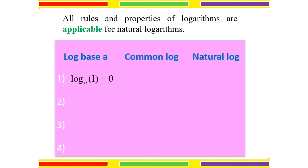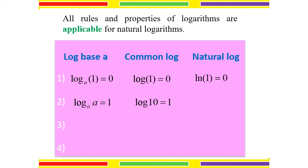All rules and properties of logarithm are also applicable for natural log. Log base A of 1 equals 0 — any value multiplied 0 times gives 1. This holds for common log (log base 10 of 1 = 0) and natural log (ln 1 = 0). The second property: log base A of A equals 1. For common log: log base 10 of 10 equals 1. For natural log: ln E equals 1.